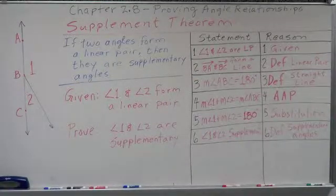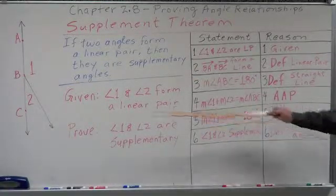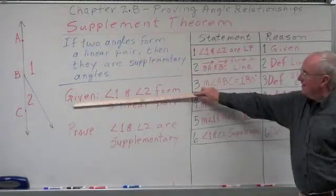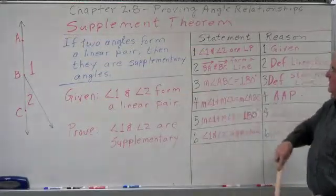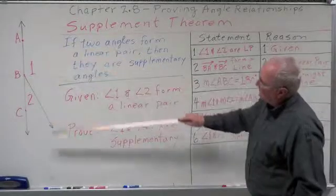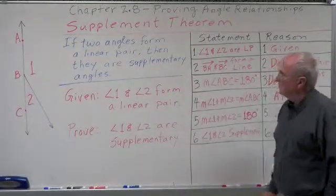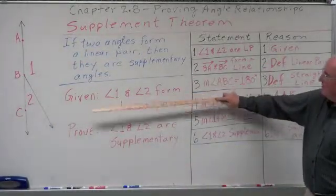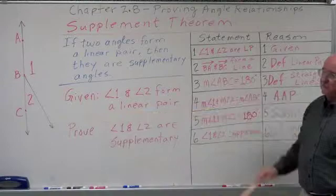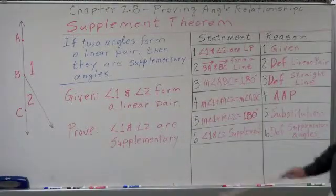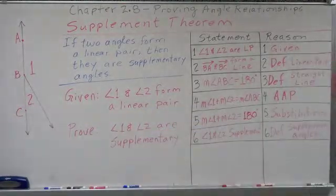In order to do our proof we need a given — taken from the hypothesis. If angle one and angle two form a linear pair, as given they do form a linear pair, then we need to prove that angle one and two are supplementary.